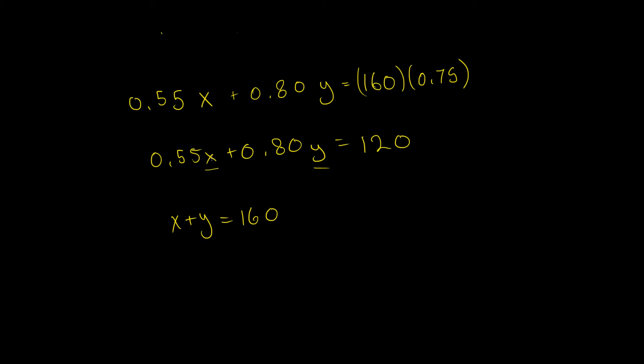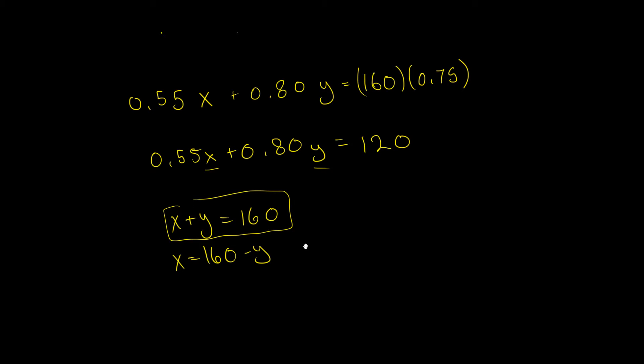And you could solve this as a linear equation by solving for Y, and then you get Y equals MX plus B, plotting it, and solving it that way. But that's a little more difficult. So instead, I'm going to just say X equals 160 minus Y. And I do this by solving this equation for X. And now I can just plug this in here.